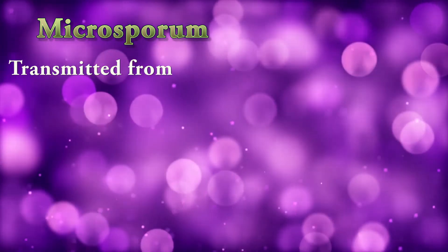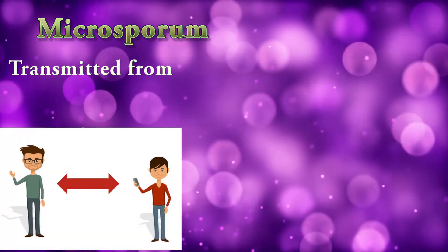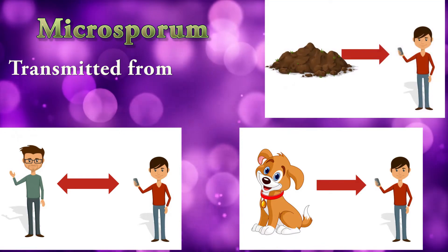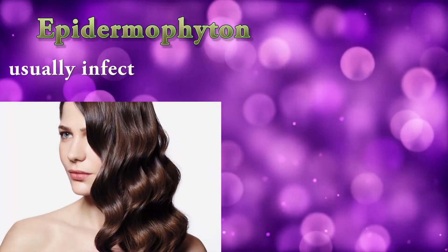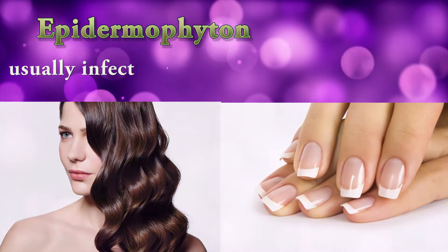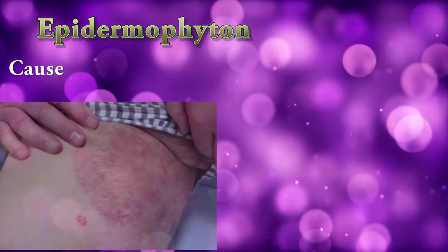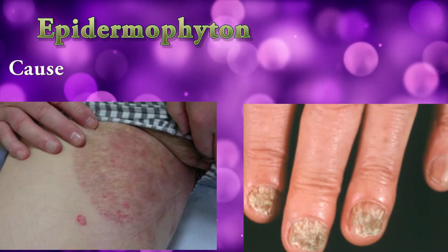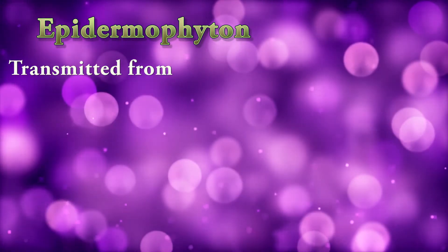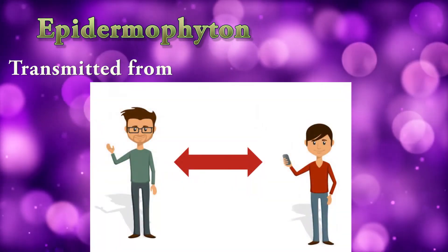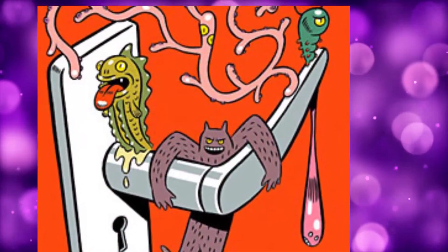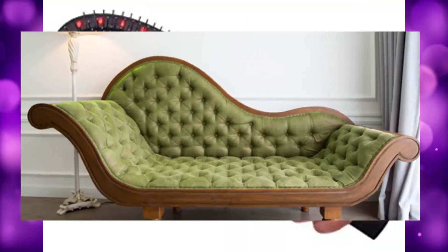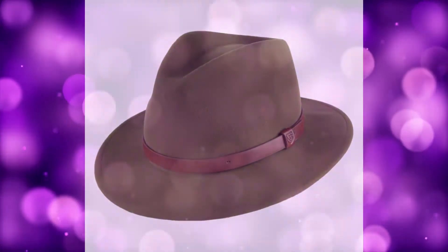Epidermophyton is usually transmitted from human to human. It causes ringworm of the skin and nails, and is transmitted strictly human to human. Transmission of dermatophytes can also occur indirectly from fomites, for example upholstery, hair brushes, and hats.